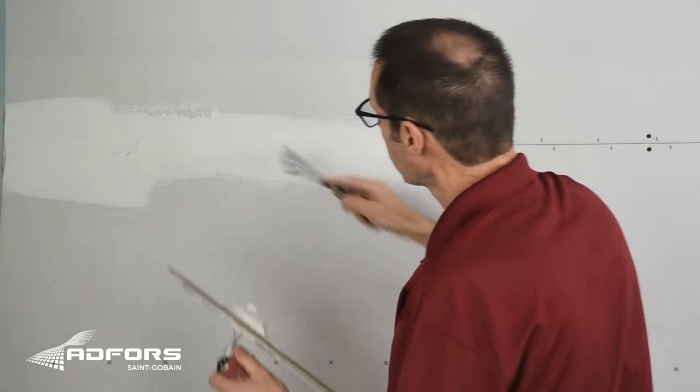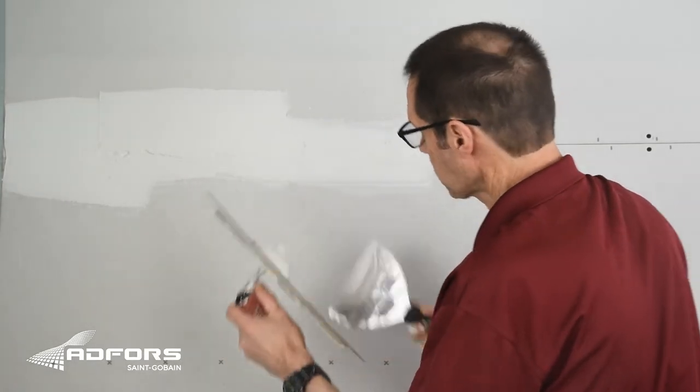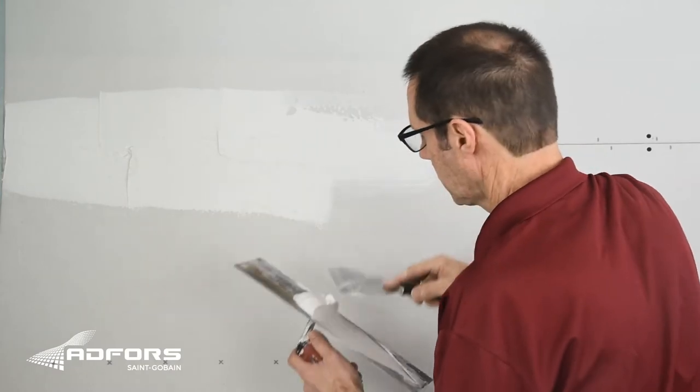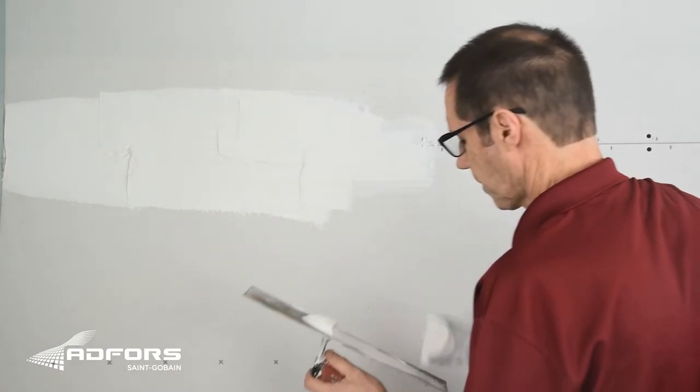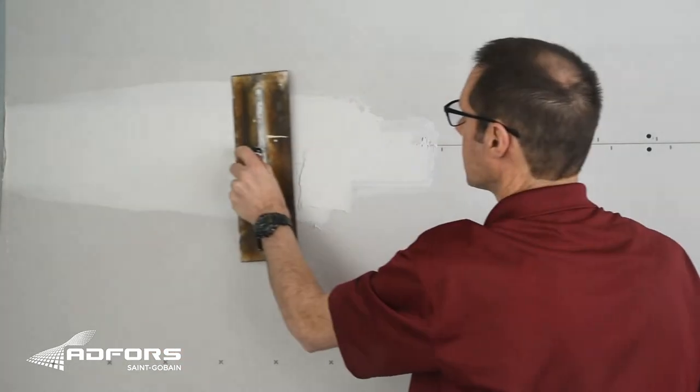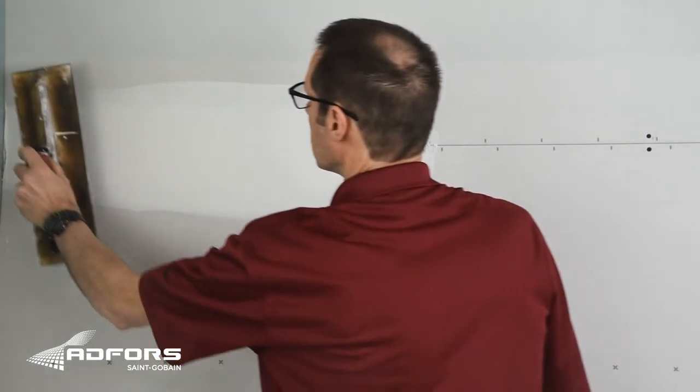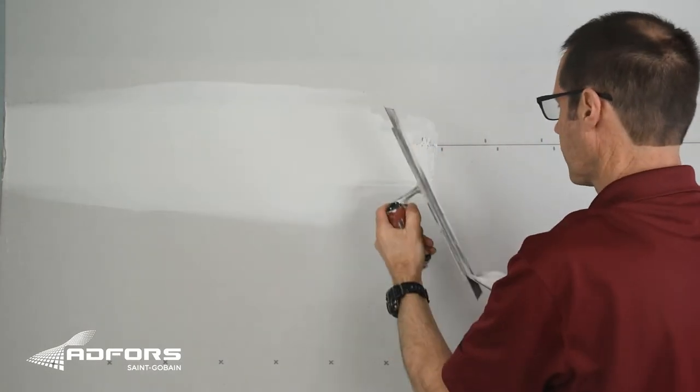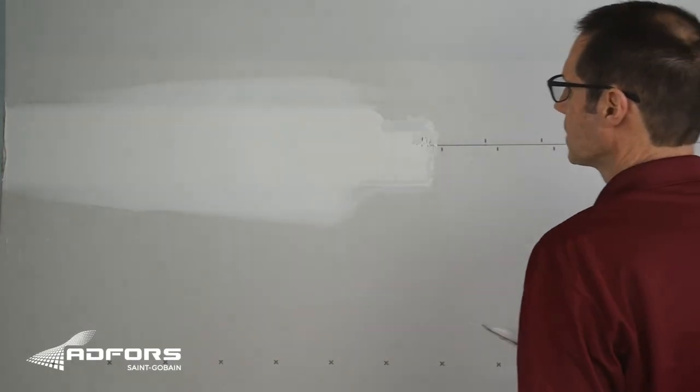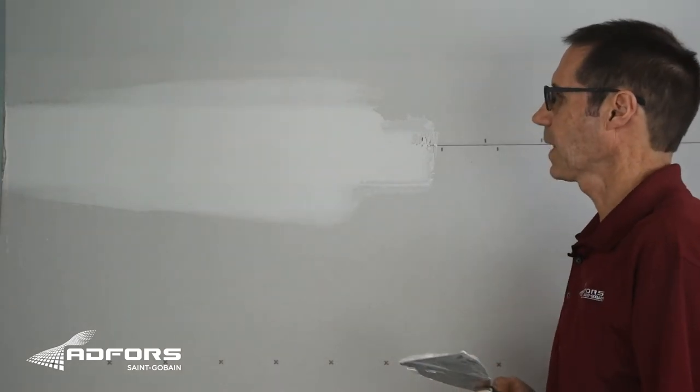What I'm doing is I'm widening out the seam slightly to conceal the seam. Now I'm going to take my trowel and just pull it over the seam, keep the edges beveled, nice and flat in the middle.